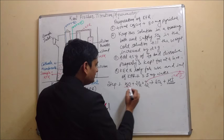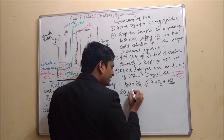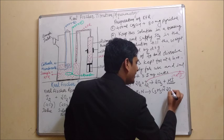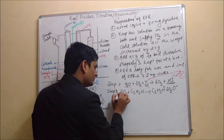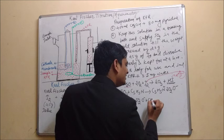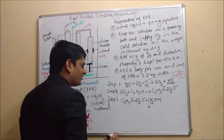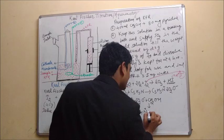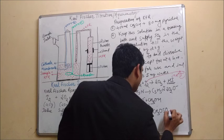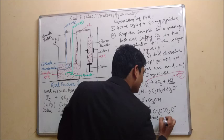In step 2, SO₃ will react with pyridine (C₅H₅N) and it will produce a complex: C₅H₅N·SO₂·O⁻. In step 3, this complex C₅H₅N·SO₂·O⁻ will react with methanol and it will form a stable complex.